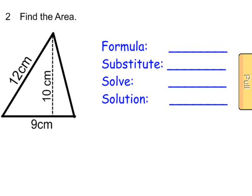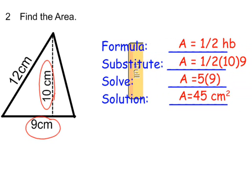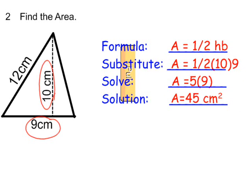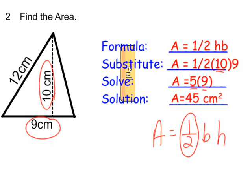In this next example, the base is an odd number and the height is an even number. Since the height is even, I like using the formula one half of the height times the base. One half of 10 is 5, times the base of 9. Remember, when doing one half base times height it doesn't matter what order you multiply those three factors.